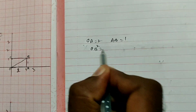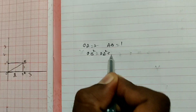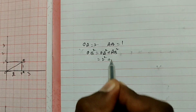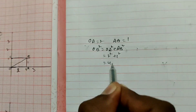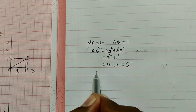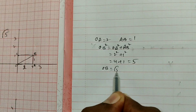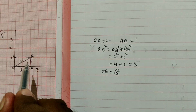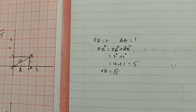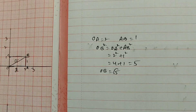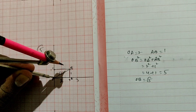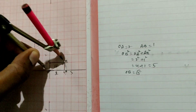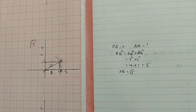According to Pythagoras' theorem, OB square is equal to OA square plus AB square, that is 2 square plus 1 square. 2 square means 4 plus 1, which equals 5. So OB square is equal to 5, and OB is equal to the square root of 5. Taking OB as radius, draw an arc which cuts the x-axis at one point. That is the value of root 5.